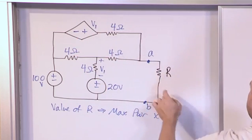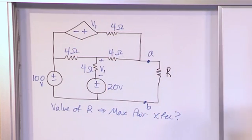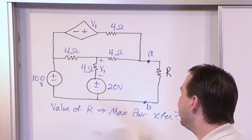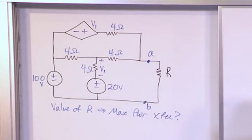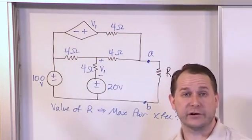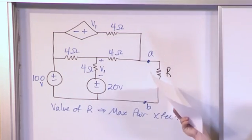So across terminal A and B, it's driving a load resistance R. And the question is that you'd be asked on an exam or a quiz, what value of this resistance do we need to choose to make sure that maximum power is being transferred from the circuit to this load resistance?